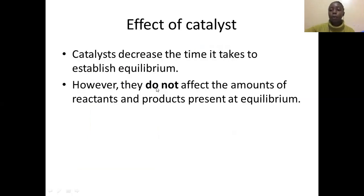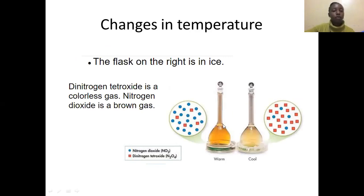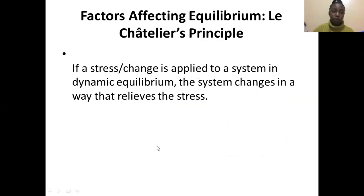Now let's talk about changes in temperature. In this diagram you can see two gases: nitrogen dioxide (NO2), which is red-brown in color, and nitrogen tetroxide (N2O4), which is almost colorless. When you change the temperature of a system in equilibrium, the equilibrium position shifts.